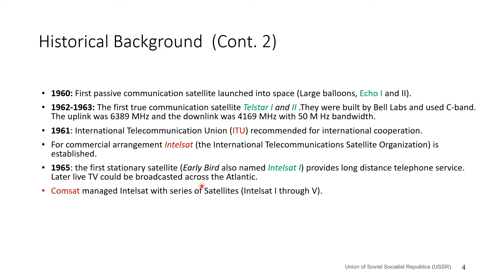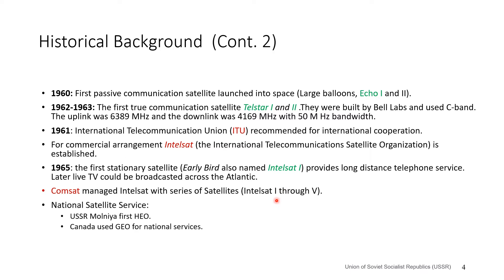Before this, you could not have TV broadcasting across the Atlantic. COMSAT was the company managing Intelsat, with a series of satellites from Intelsat 1 through Intelsat 5.